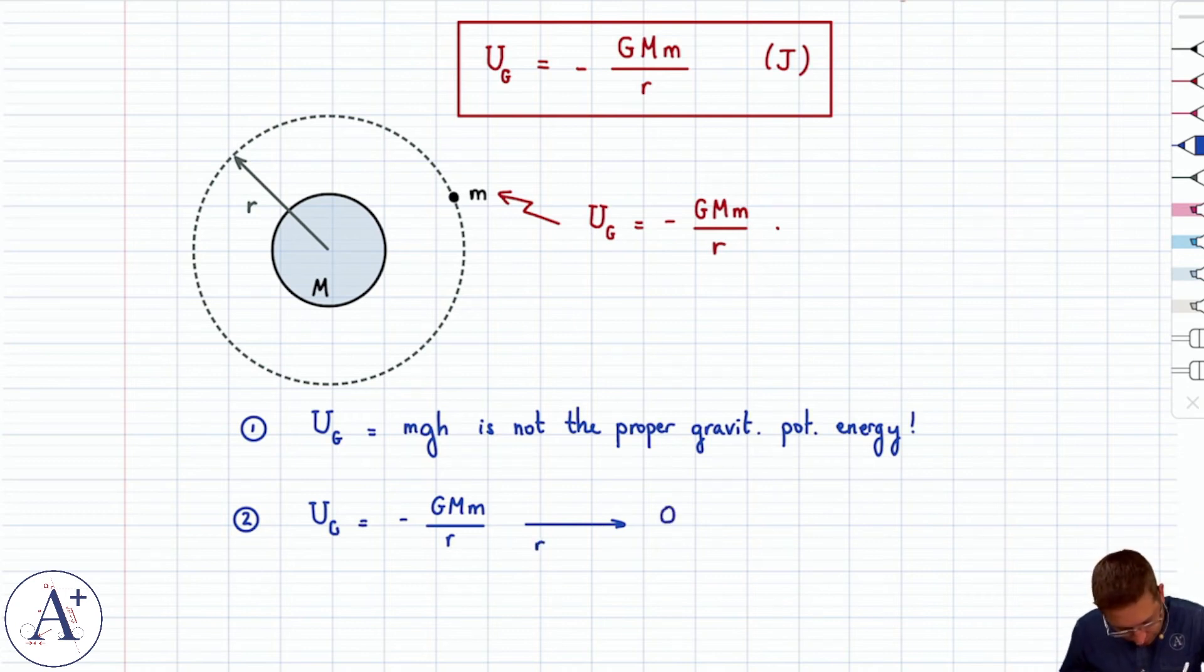So as r approaches infinity, U goes to zero, which means that the reference U equals zero is determined for me. I don't get to pick just any one I want. That's because minus G big M little m over r goes to zero when r goes to infinity. Mathematically, I don't get to dispute that. And so as a consequence, I don't just get to pick U sub g equals zero anywhere.